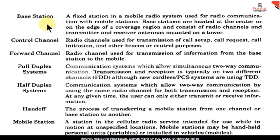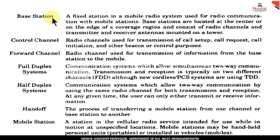Base station simply means it is a fixed station in a mobile radio system for communication with mobile stations. These base stations are located at the center or edge of a coverage zone or a cell. It consists of radio channels, transmitter and receiver antennas mounted on a tower. Simply, our mobile tower is termed as a base station.